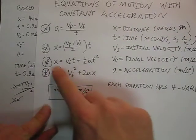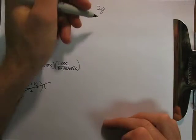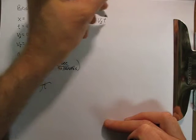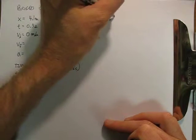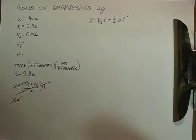Now, we need to find the equation that does not contain VF. Well, this one here does not contain VF. So, let's use that one. X equals VIT plus 1 half AT squared.